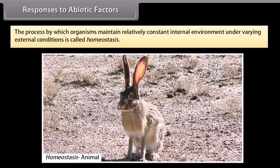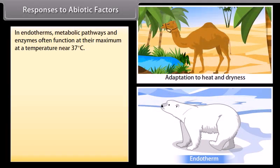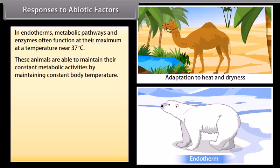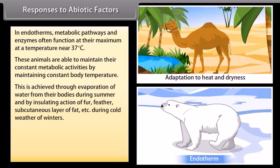Responses to abiotic factors: the process by which organisms maintain a relatively constant internal environment under varying external conditions is called homeostasis. In endotherms, metabolic pathways and enzymes often function at their maximum at a temperature near 37 degrees Celsius. These animals maintain constant metabolic activities by maintaining constant body temperature, achieved through evaporation of water from their bodies during summer and by the insulating action of fur, feathers, and subcutaneous layers of fat.